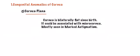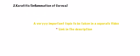The third congenital anomaly is cornea plana. Cornea plana is a condition where the cornea is bilaterally flat since birth — the normal curvature of the cornea is absent. This condition can be associated with microcornea and is mostly seen alongside marked astigmatism.